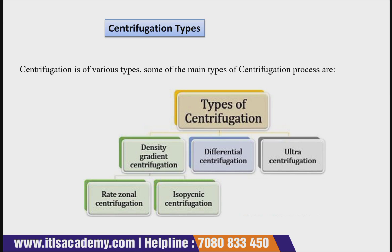Differential centrifugation is a common procedure in microbiology and cytology where cells are studied. It is used to separate certain organelles for further analysis of specific parts of the cell. The tissue sample is first homogenized to break the cell membrane and mix up the cell content, and then subjected to repeated centrifugation, each time removing the pellet and increasing the centrifugal force.